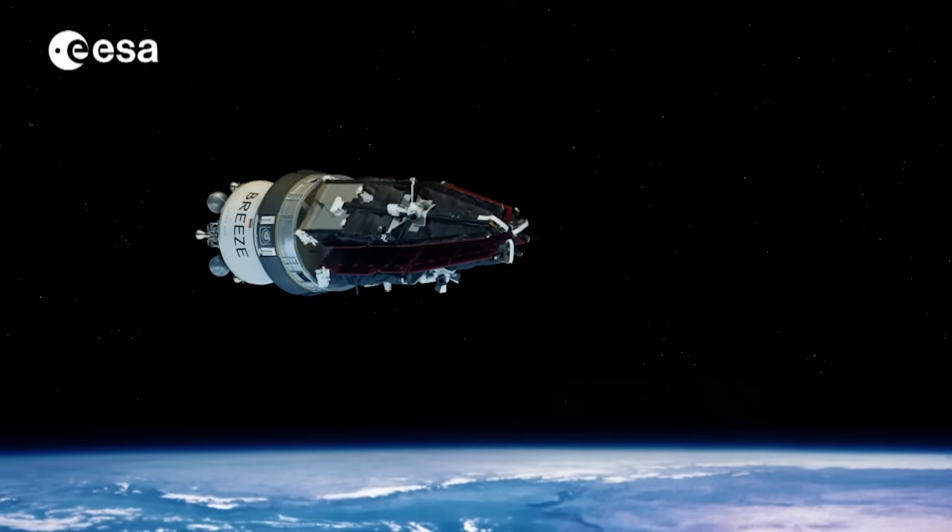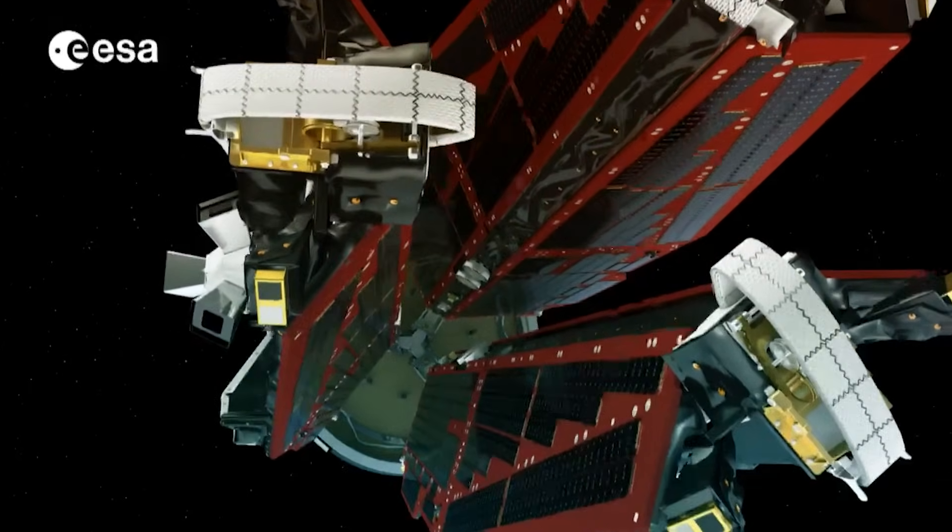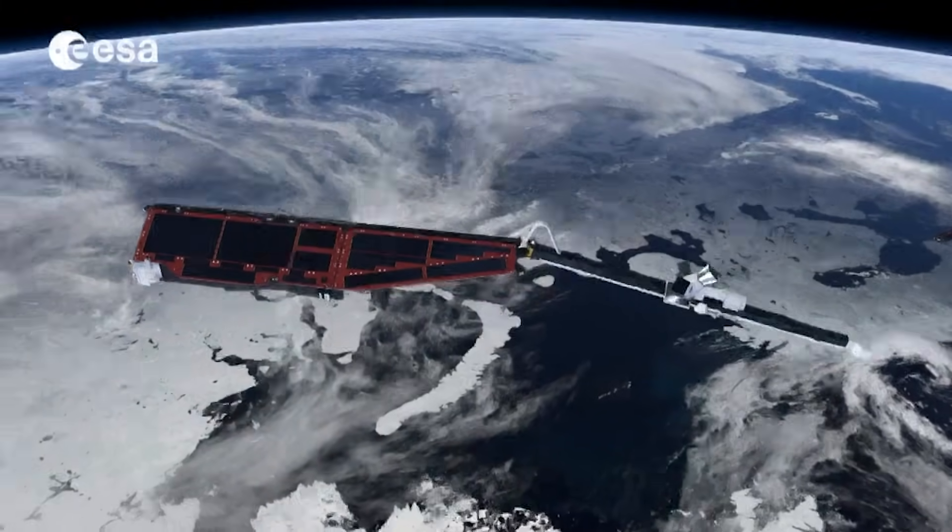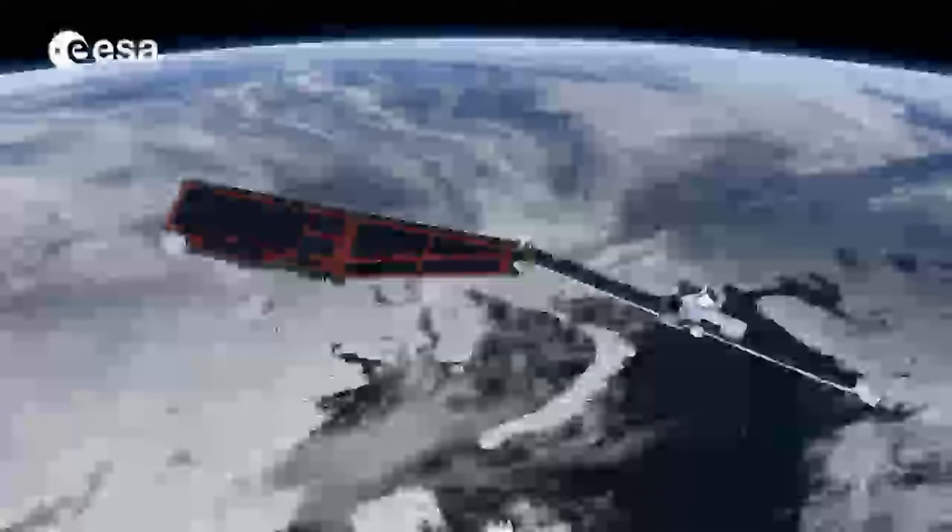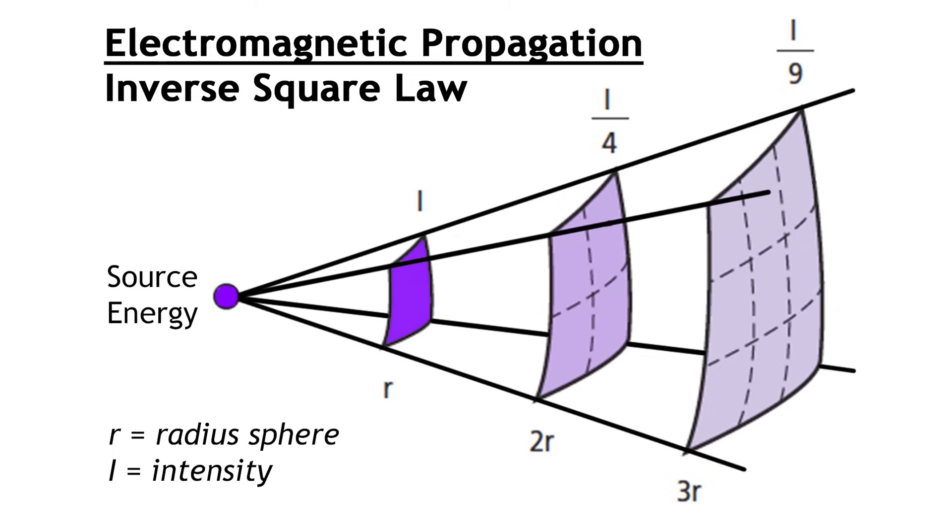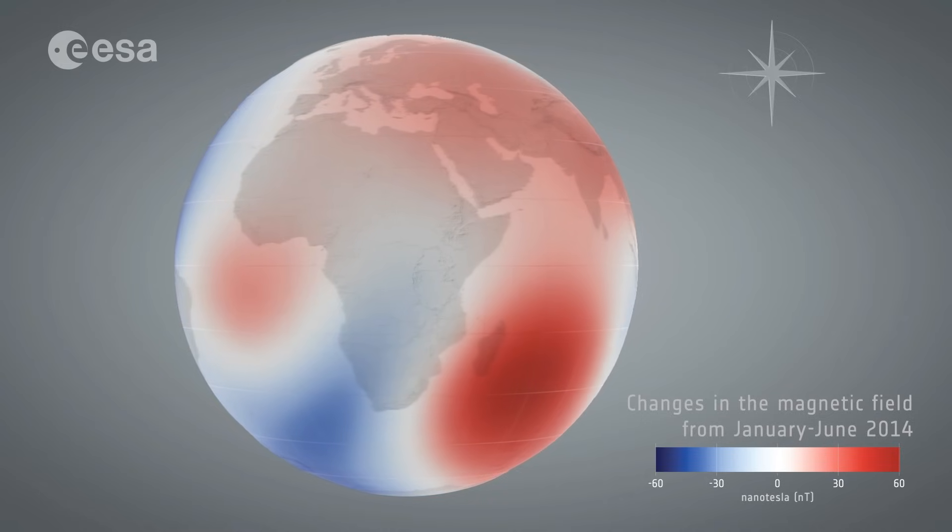They launched a swarm satellite constellation in November 2013 and immediately began collecting data on Earth's magnetic field as it is in space. Keep in mind, the magnetic field diminishes as you go further away from the core and further away from the surface of the planet. It decays via inverse square law. So to put that simply, as you increase the distance by two, the attraction diminishes by four, or in other words, the strength goes down by four.